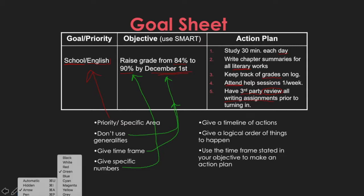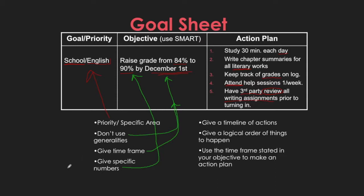Action plans. Again, it really takes practice to assess and think about what steps you actually have to take to get to where you want to go. Give a timeline of these actions — notice that they went from a daily point of view down to an overall action. Make sure it's in a logical order; sometimes you may want to jot them out on scratch paper, number them by priority, and then put them into your action plan. Use the time frame stated in your objective to develop that action plan.